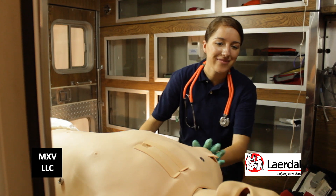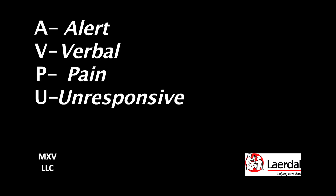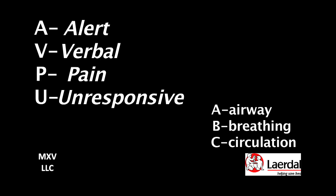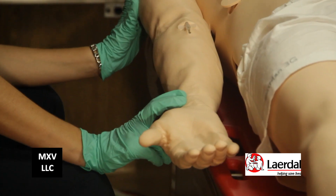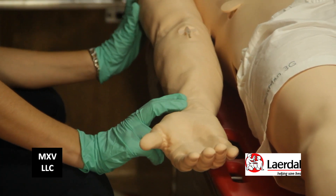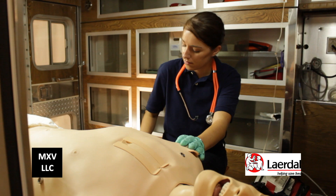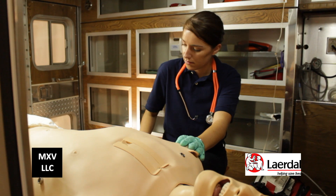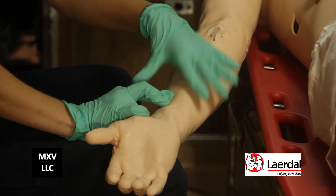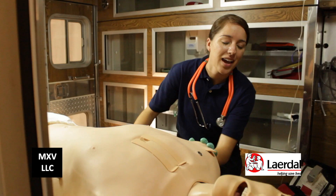The paramedic introduces herself to the patient in order to assess AVPU and ABCs, while placing a hand on her shoulder to comfort her and the other on her wrist to complete a rapid radial pulse check. The paramedic also notices the patient's skin is pale with a blue tint.